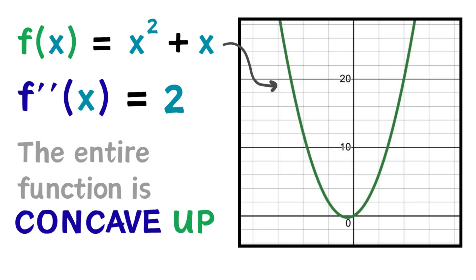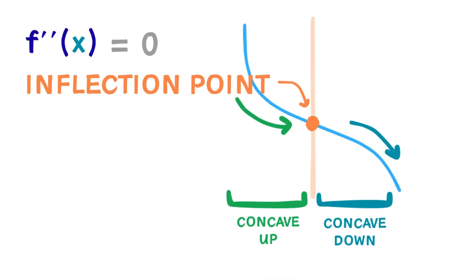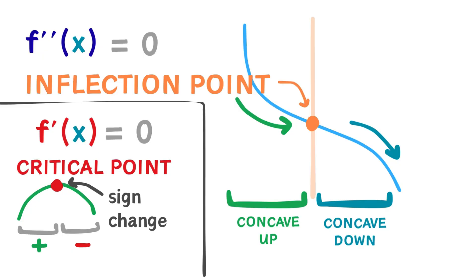Now, a positive second derivative means concave up, and a negative second derivative means concave down. When the second derivative equals 0, we run into what we call an inflection point, or where the function switches concavity. Inflection points behave a lot like critical points with first derivatives.